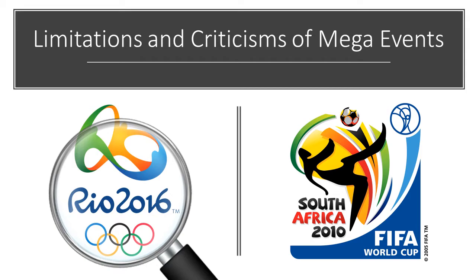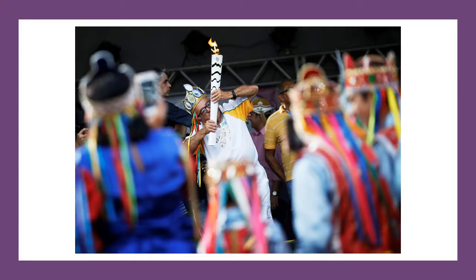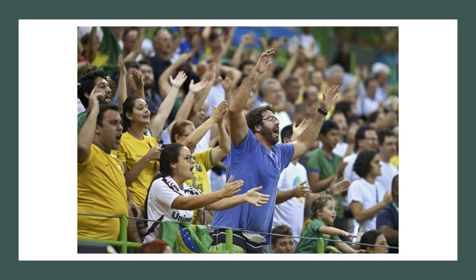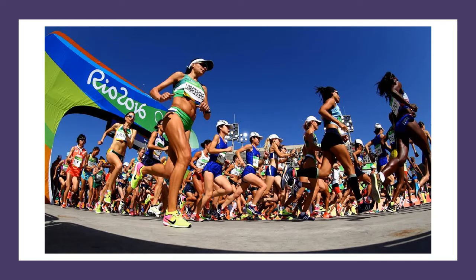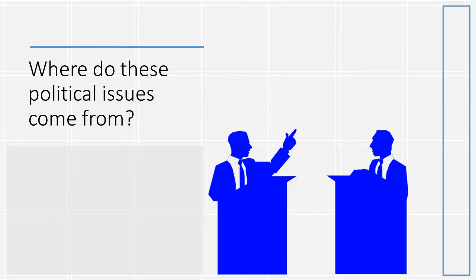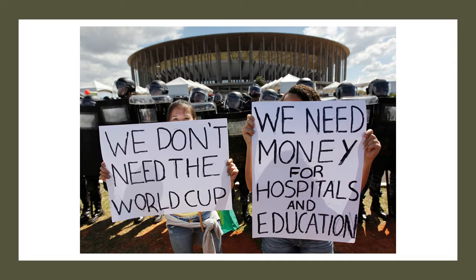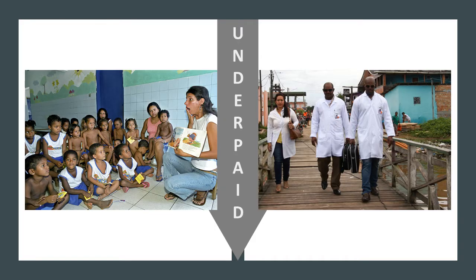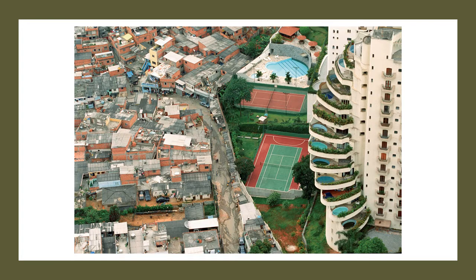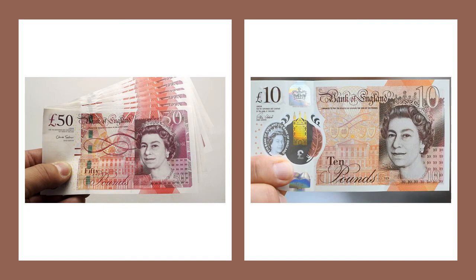Although there are some benefits of mega events happening in developing countries, for Brazil the drawbacks heavily outweighed the benefits. The sport events were disrupted due to political issues, the torch ceremony was delayed, the audience booed the president at the opening ceremony and efforts were made to impede the women's marathon. A large portion of Brazil's population did not welcome the mega events because of the major lack of funds for teachers and doctors, and the rich occupants of Brazil being protected at the expense of the poor. Even during Olympic preparations, major inequalities in payments were observed — an international Olympic committee executive was paid £700 a day compared to cleaners at the Olympic Village who were paid only £10 per day.